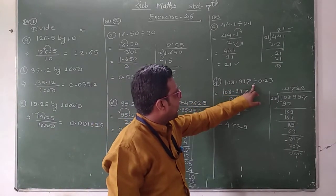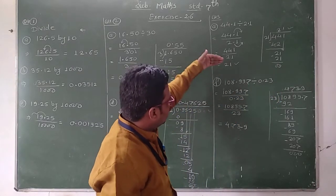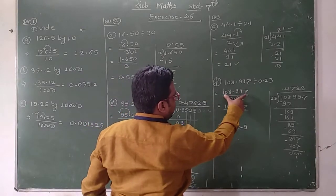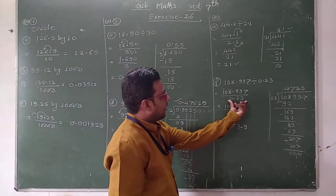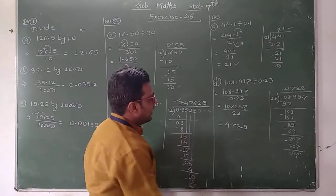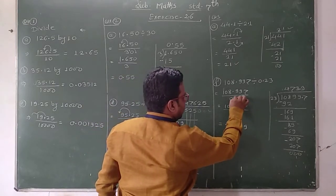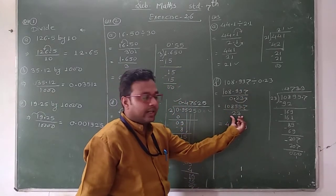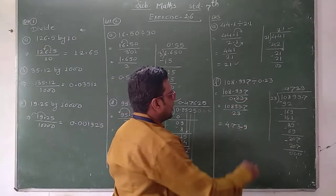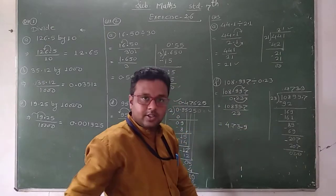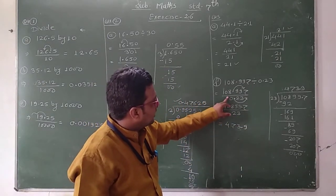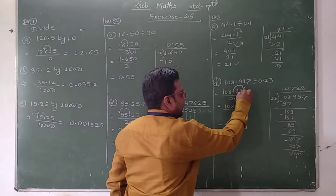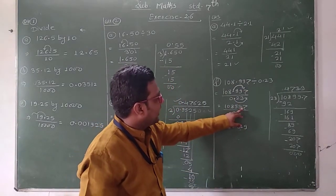Next question: 108.997 is divided by 0.23. First step, we write the number in this form: 108.997 divided by 0.23. Now first we write the divisor as a whole number. Therefore we have to shift the decimal point 2 digits to the right — then the number becomes 23, which is a whole number. If we shift the decimal point 2 digits in the denominator, we have to shift it 2 digits in the numerator also. Then the numerator number becomes 10899.7.